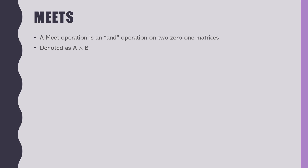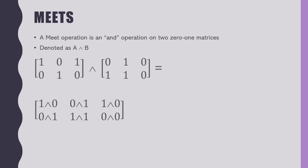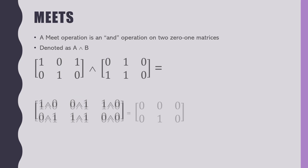Let's look at a meet. A meet is an AND operation — it's denoted as A AND B. This is back to our very first day of class. How do I do a meet on these? It looks like addition, but we're not really adding — it was an OR operation before. This is what it will look like. We're taking this component here and ANDing it with this to give us this result, and so on down the line. When all is said and done, we end up with this matrix.